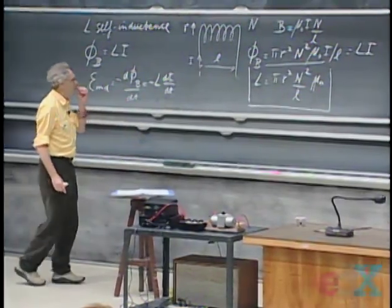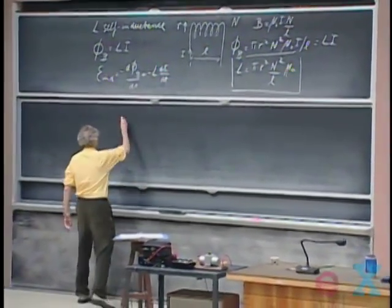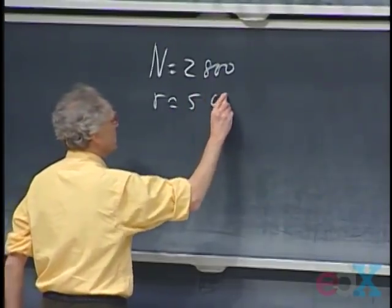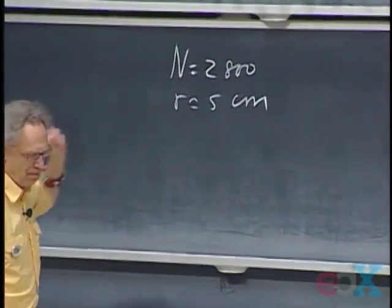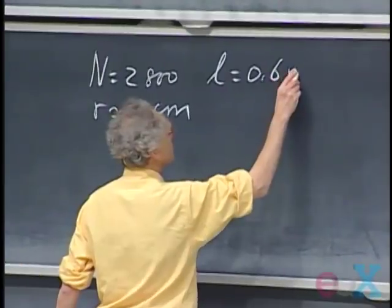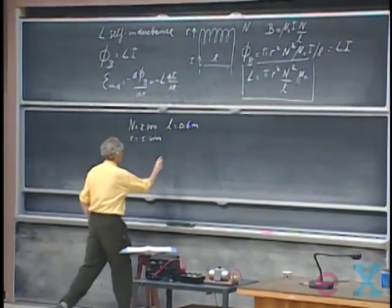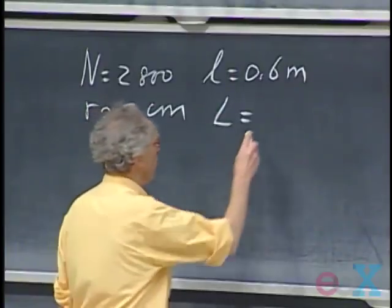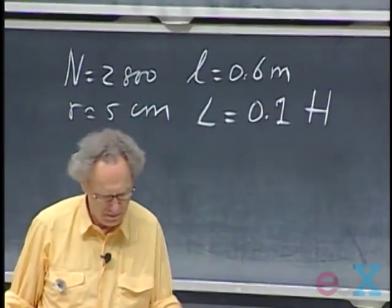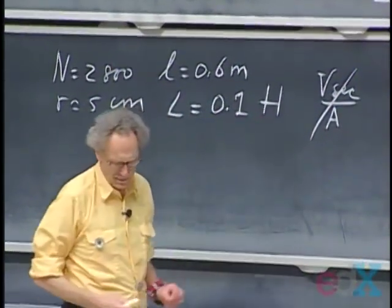We can calculate what this self-inductance is for a solenoid we have used in class several times. We had one with 2800 windings, r was about five centimeters — we must work in SI — and length was 0.6 meters. Substituting those numbers, the self-inductance of that solenoid is 0.1 in SI units. We call the SI unit the Henry, capital H — the same as volt-seconds per ampere, but we call it Henry.